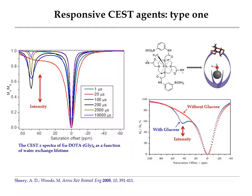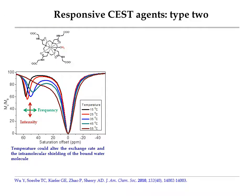The second type of CEST responsive agent shows a change both in CEST resonance frequency and in CEST intensity as a response. For example, the CEST profile of this europium dotted glutamate changes both in CEST intensity and CEST frequency in response to temperature variations.